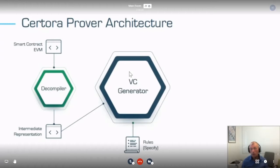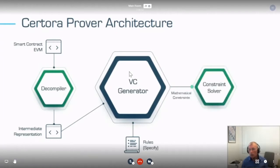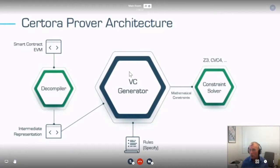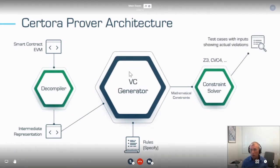The VC generator takes the rules from outside and the intermediate representation, and generates constraints — verification conditions. We feed these to existing constraint solvers operating at the SMT level, which we can send to different solvers in the public domain. These constraint solvers either give you a test case showing the actual violation, or give you a formal proof that the rules hold on all inputs.